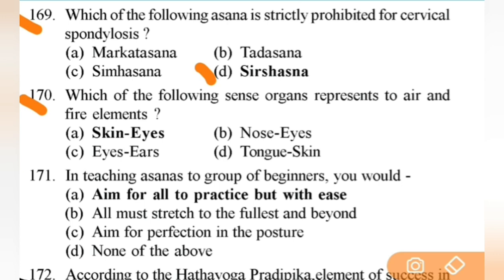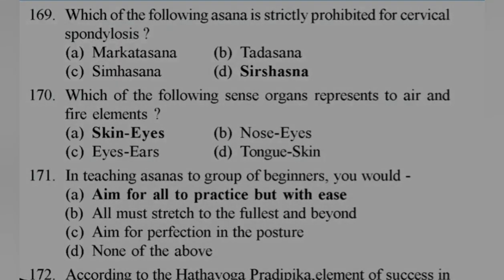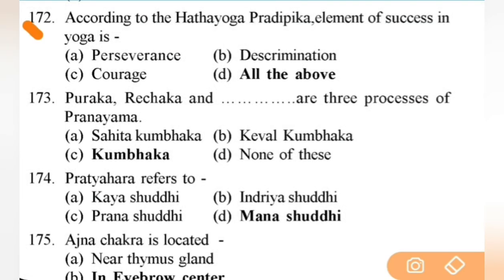Which asana is strictly prohibited for cervical spondylosis? Right answer is D — Sirsasana. Next: which sense organs represent air and fire elements? Right answer is A — skin and eyes — important. Next: in teaching asana to a group of beginners, you would — right answer is A — aim for all to practice but with ease. Next: according to Hatha Yoga Pradipika, the element of success in yoga is — right answer is D — all of the above — important, write it down.